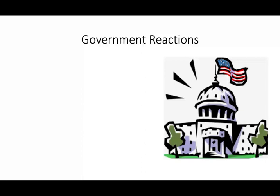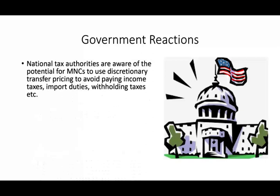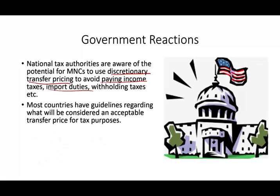National tax authorities are aware that multinational companies may use discretionary transfer pricing to avoid paying income taxes, import duties, and strategies for withholding taxes that we looked at in the prior session. Most countries have guidelines regarding what will be considered an acceptable transfer price for tax purposes.